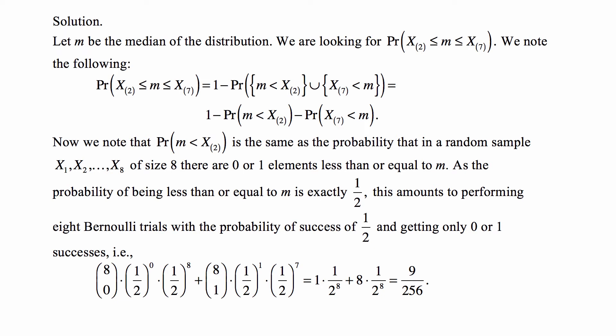Let m be the median of the distribution. We're looking for the probability that x(2) is less than or equal to m, but x(7) is greater than or equal to m, simultaneously. We note that the complement in the probability space is that either x(2), the second order statistic, is more than m, or the seventh order statistic is less than m.